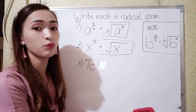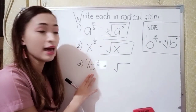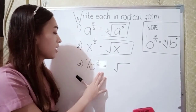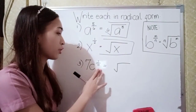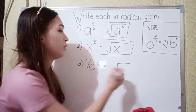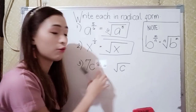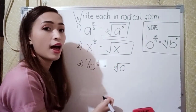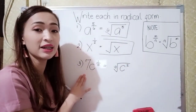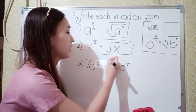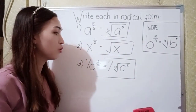For number 3, we have 7c raised to 2 thirds. Since only c is raised to 2 thirds — because there is no grouping symbol — only c is our radicand. Our denominator 3 would be our index, and our numerator 2 would be our power. Since 7 is not raised to 2 thirds, 7 stays outside. So our final answer for number 3 is 7 times the cube root of c squared.